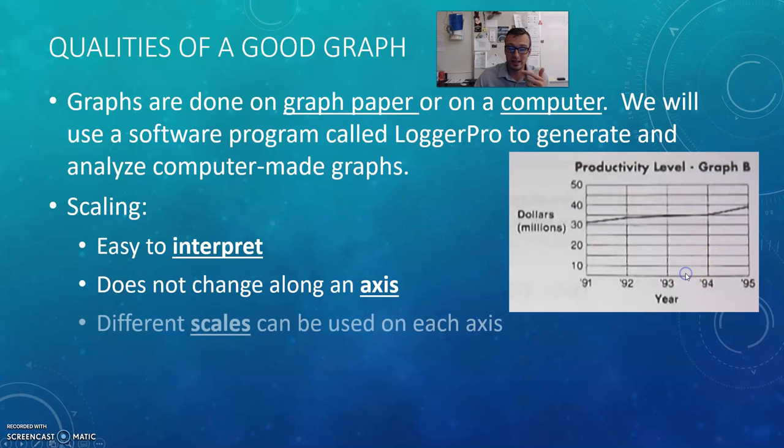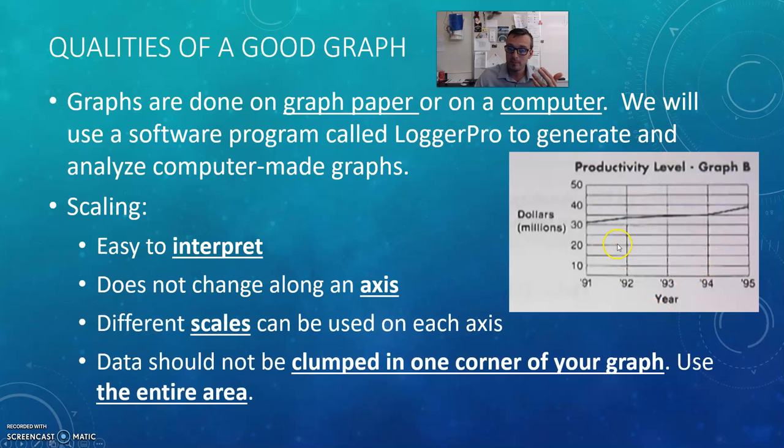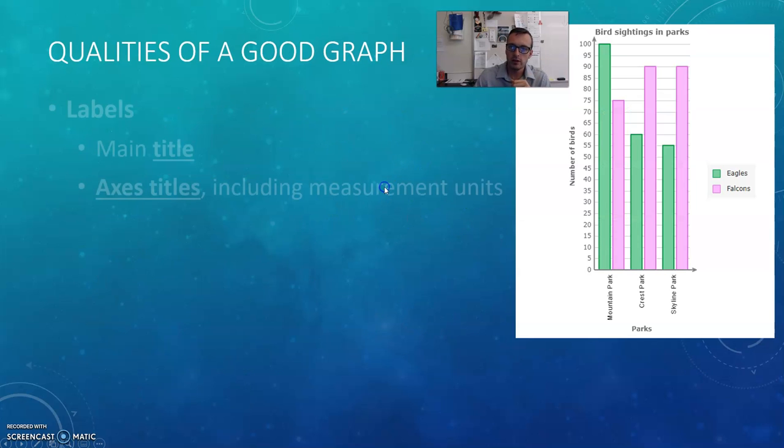You want to scale your graph appropriately so that it's easy to interpret and doesn't change along the axis. You are allowed to use different scales on these axes, but you don't want to clump everything together in your graphing space. This is a nice job here because you can see each increment carries a certain weight—every few tick marks is worth 10 and each tick mark is one year. It's easy to interpret, it's consistent, and it spreads our data out nicely.